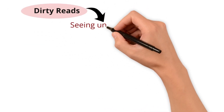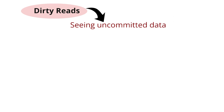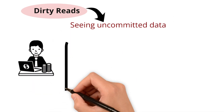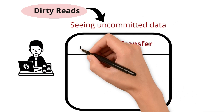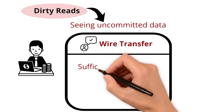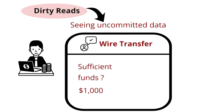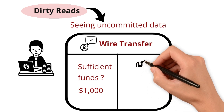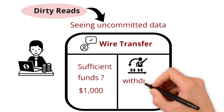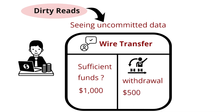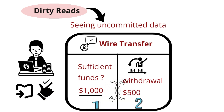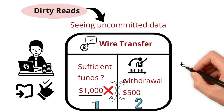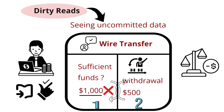Dirty reads means seeing uncommitted data. Imagine you are a bank teller processing a wire transfer. You check the system to see if account A has sufficient funds for a $1,000 transfer. However, before you can confirm the transaction, the account owner calls and initiates a withdrawal of $500. Due to a dirty read, you might accidentally approve the transfer for $1,000 even though the account balance wouldn't support it after the withdrawal, potentially causing an overdraft and a negative balance.